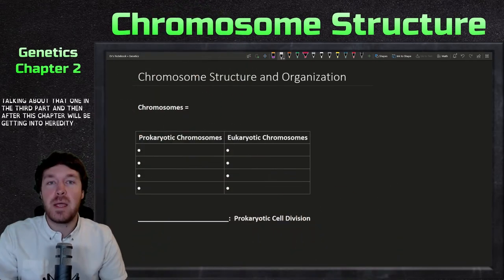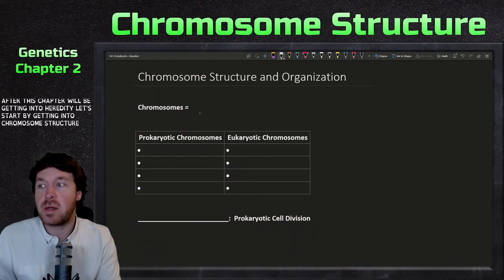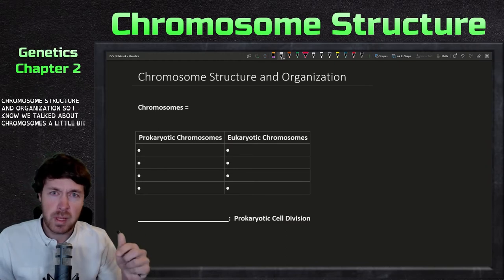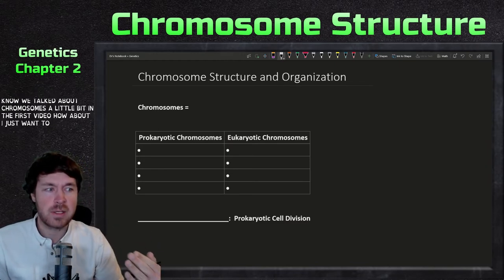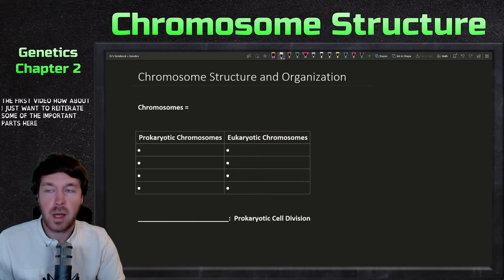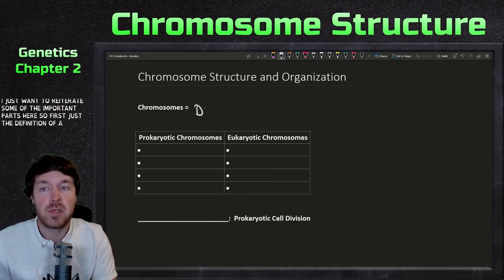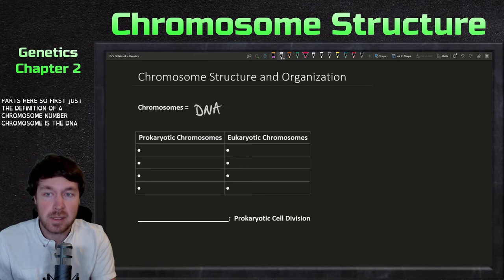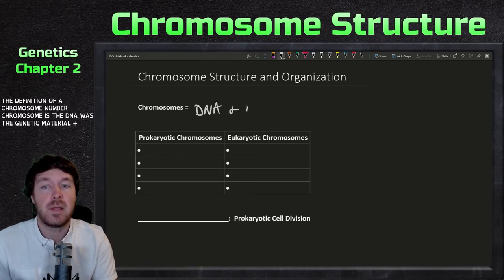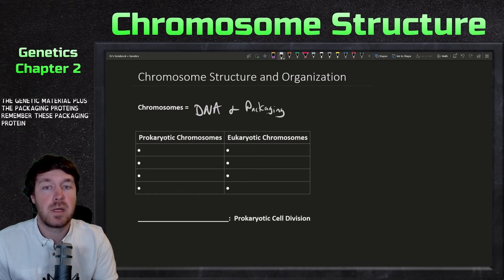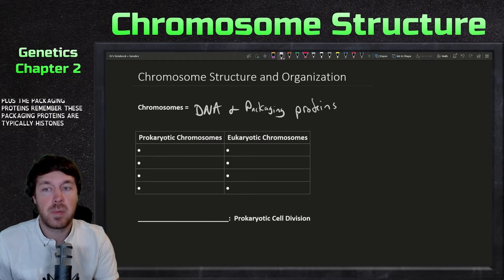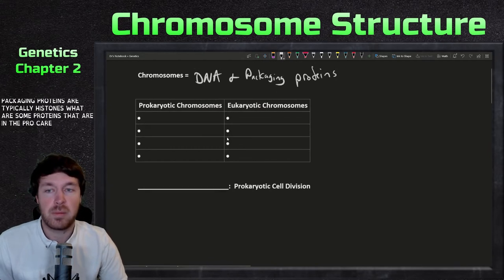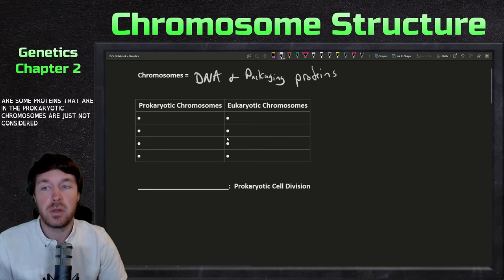So let's start out by getting into chromosome structure and organization. We talked about chromosomes a little bit in the first video, but I just want to reiterate some of the important parts here. First, the definition of a chromosome: a chromosome is the DNA — the genetic material — plus the packaging proteins. These packaging proteins are typically histones, though there are some proteins in prokaryotic chromosomes that are not considered eukaryotic histones.